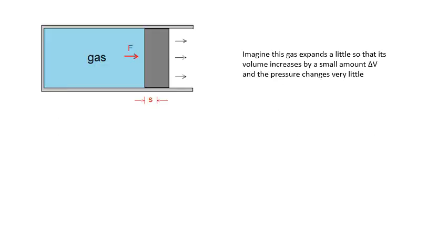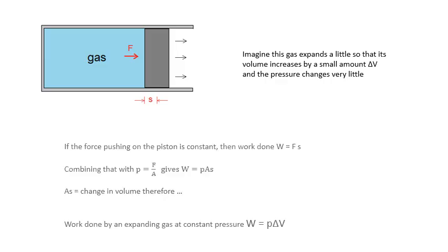Now why all these different changes on a pV graph? Well, imagine this gas expands a little bit so that its volume increases by a very small amount delta V, and because it's a very small change, we'll assume that the pressure of the gas changes very little. So the volume is increased delta V and we will assume that the pressure is constant.